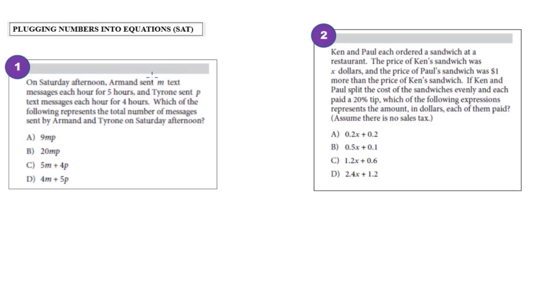So let's try some numbers. It says that Armand sent M text messages each hour for five hours. So I could let M be equal to two.